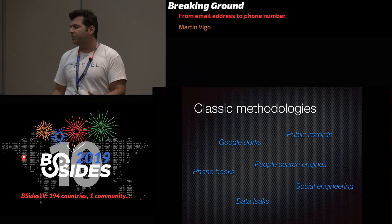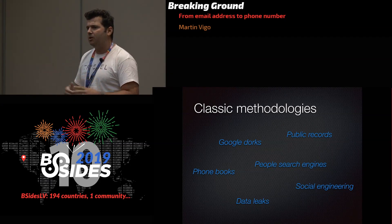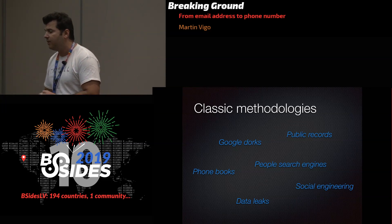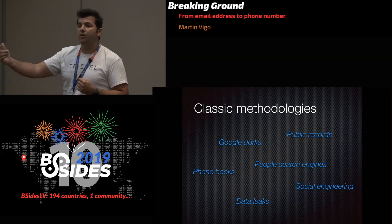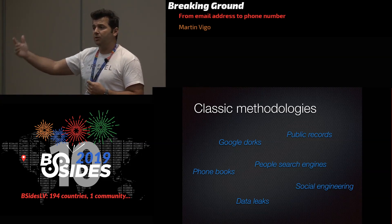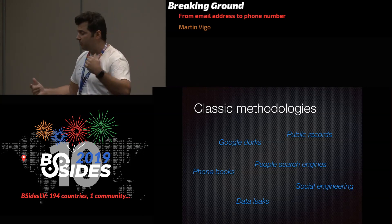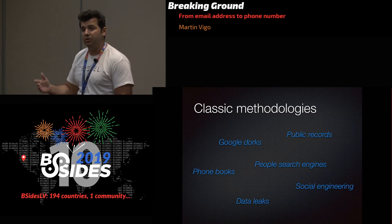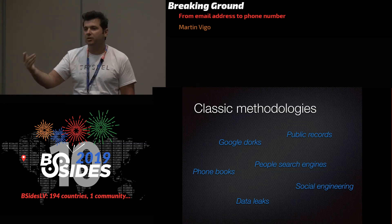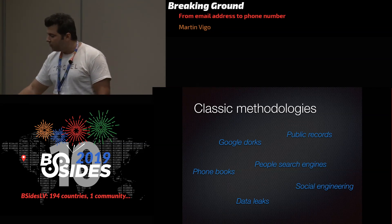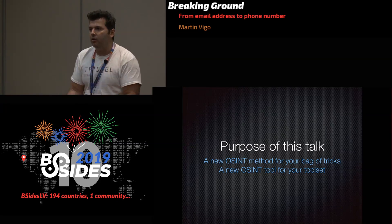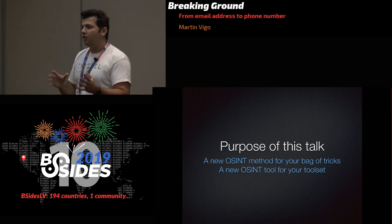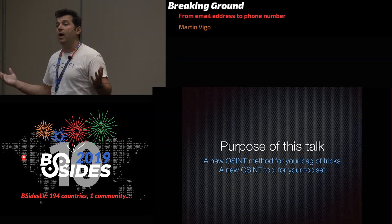The classic OSINT methodologies include: public records like court documents, Google Dorks for forum posts where someone shared their phone number, people search engines like Spokeo or PeopleFinder where you input an email and get a phone number, data leaks, and social engineering. The purpose of this talk is to give you another technique, because none of these are bulletproof — you want a wide range of tools in your bag.